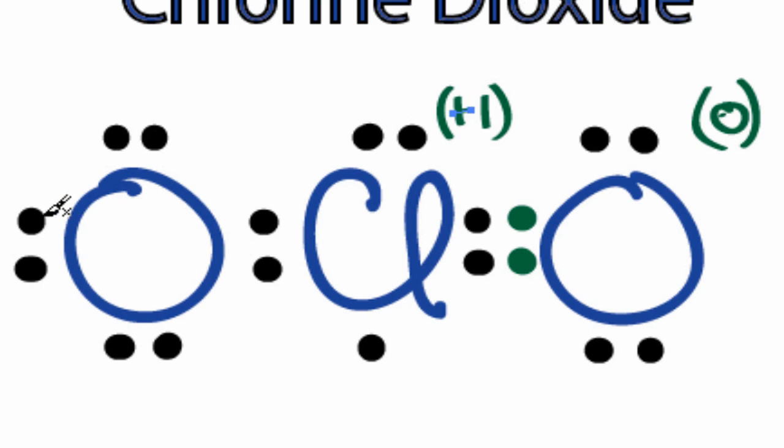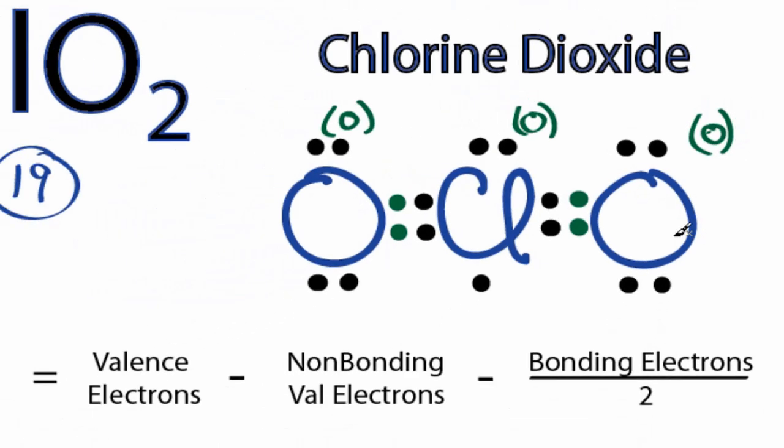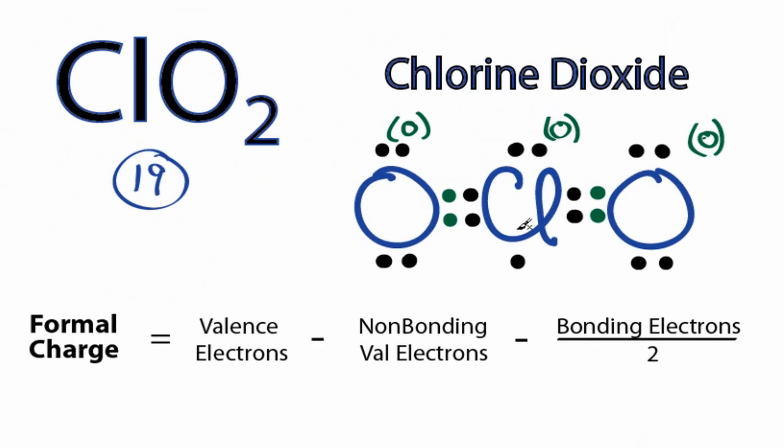Let's form a double bond with this other oxygen over here. So, now I've formed this double bond. The formal charge on this oxygen is zero, and the formal charge on the chlorine is now zero. So, all of the formal charges are zero with these double bonds between the chlorines and the oxygens. That makes this the best Lewis structure for ClO2.